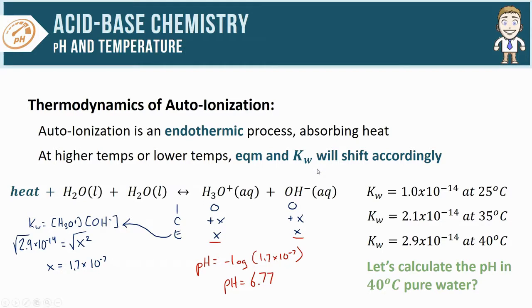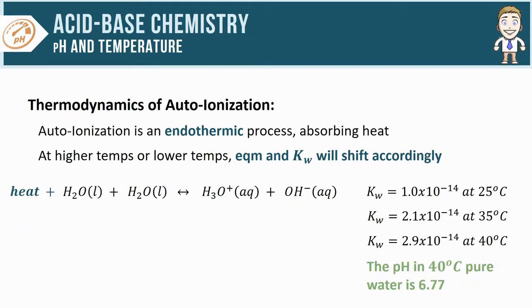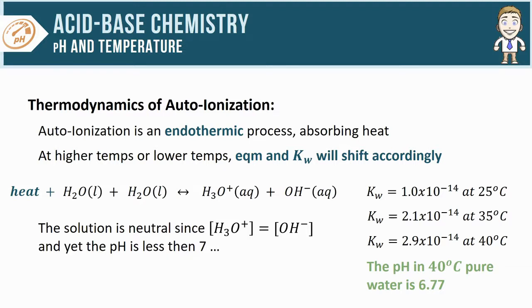So the pH of pure water at 40°C is 6.77. That should seem pretty weird because this is pure water—it is neutral with equal amounts of H3O+ and OH-, and yet the pH is less than 7. This gives rise to two important conclusions.